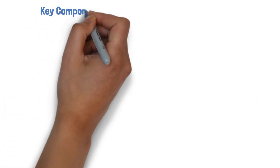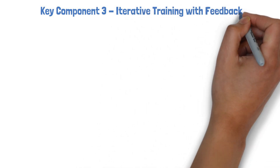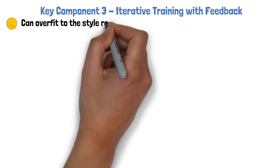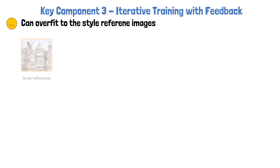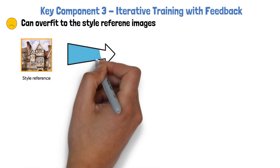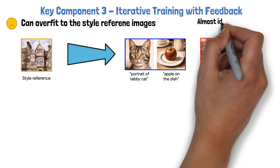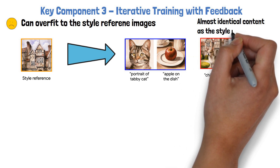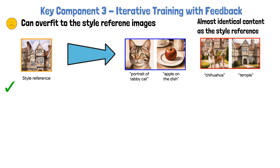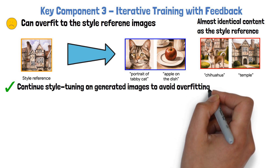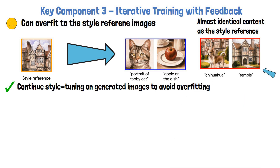The third key component in building StyleDrop is iterative training with feedback. What the researchers observed is that using the model resulted from steps 1 and 2 can be sub-optimal due to overfitting to the style reference images. For example, when they style-tuned using adapter learning over a style reference image, they generated a few images from the model and some of them were good, such as examples of a cat and an apple. But some examples such as a chihuahua and a temple contained content almost identical to the style reference image. As a result, they came up with the third step of iterative training with feedback, where they continue the style-tuning training on generated images with their prompts whose quality is good, such as these two examples with a red frame.